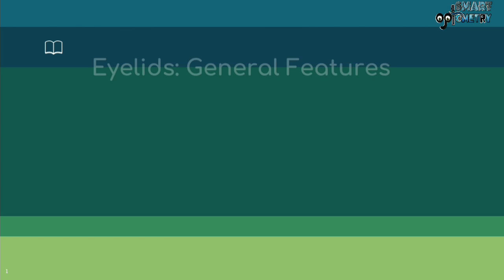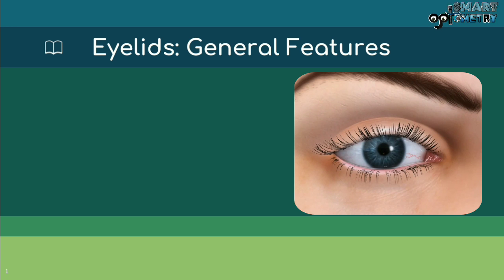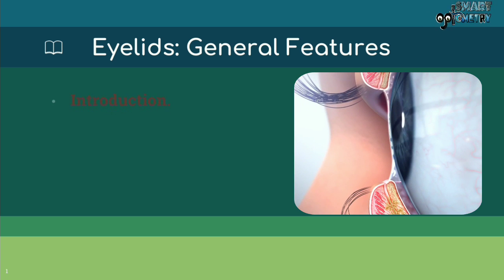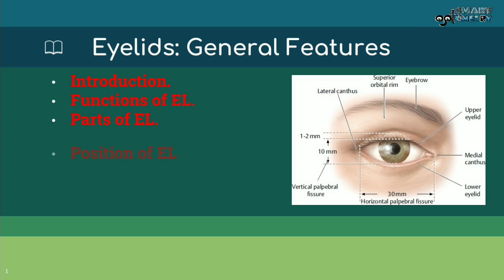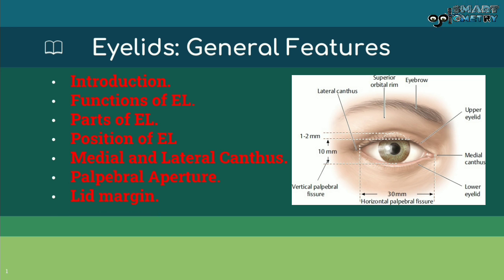Today we will discuss the general features of the eyelid. We will cover: introduction, function of eyelids, parts of eyelids, positions of eyelids, medial and lateral cantus, palpebral aperture, and the lid margin.